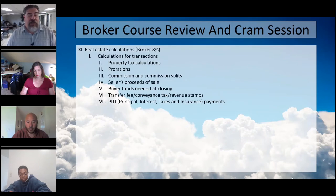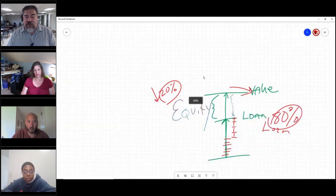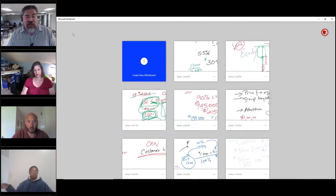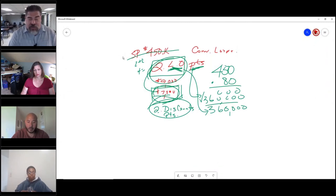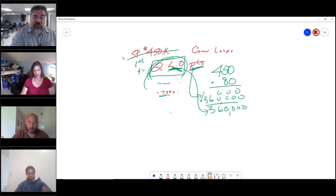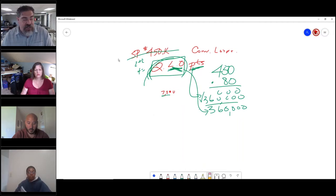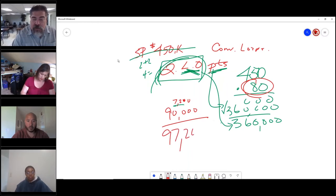Commission spent, seller's proceeds, buyer's funds needed to close—watch for the trick. You can see that this was the number we came up with: $7,200. So my question to you would be, how much did the buyer need to bring to closing? Please do not get fooled or tricked that they still have to bring the 20%, which is going to be $90,000.